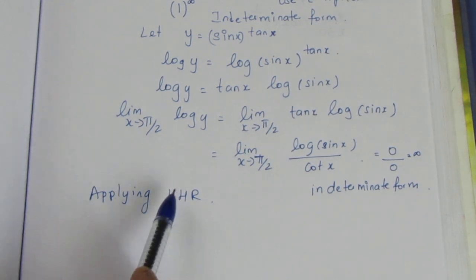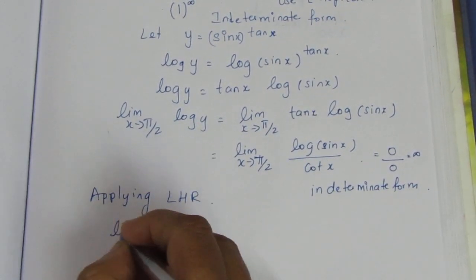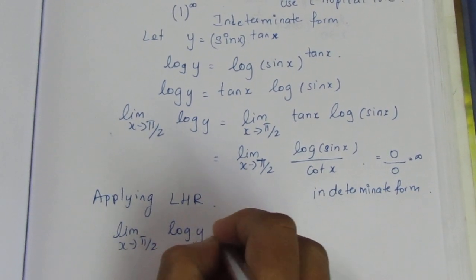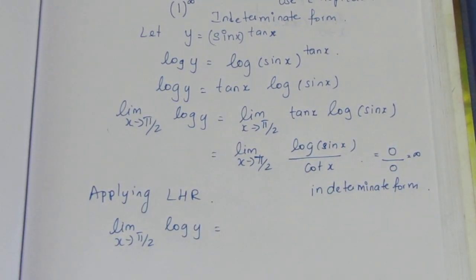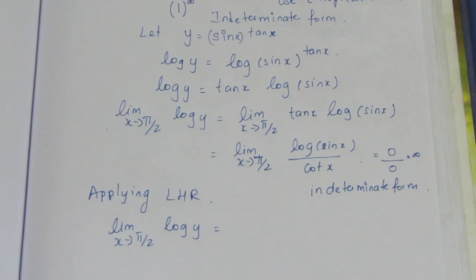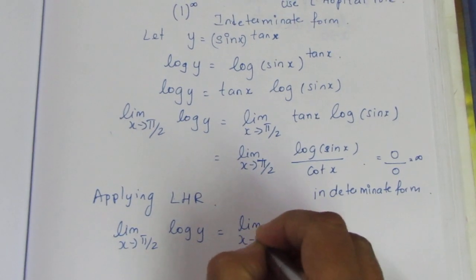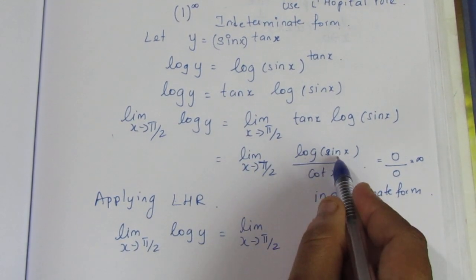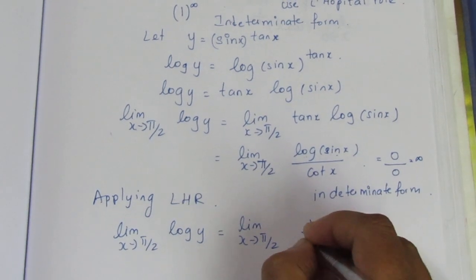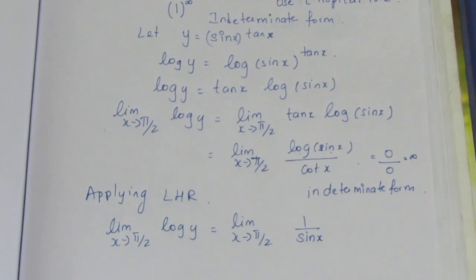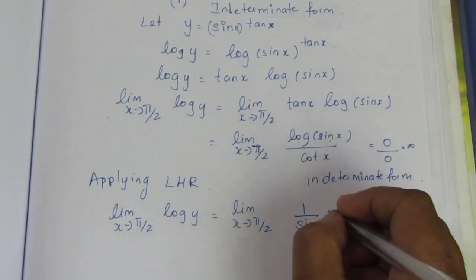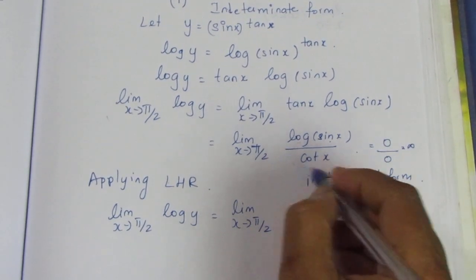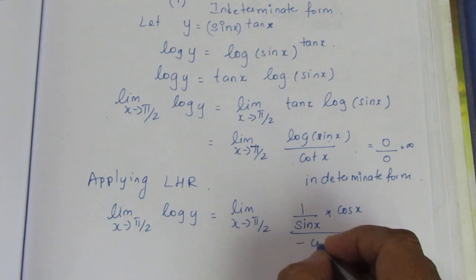Applying L'Hôpital's rule, limit x tends to π/2, log y equals limit x tends to π/2, differentiate numerator and denominator. The derivative of log sin x is 1 by sin x times cos x, which is cot x. The derivative of cot x is minus cosec squared x.